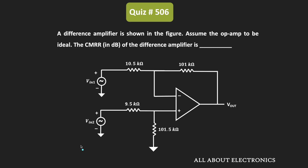Hey friends, welcome to the YouTube channel all about electronics. In this question, we have been given the difference amplifier circuit where the op-amp is an ideal op-amp. We have been asked to find the common mode rejection ratio, or CMRR, of the given difference amplifier.